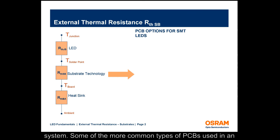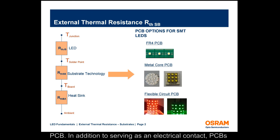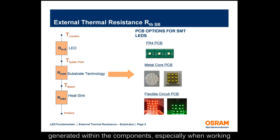Some of the more common types of PCBs used in an LED system design include FR4, Metal core PCB, and Flex PCB. In addition to serving as an electrical contact, PCBs also have to ensure efficient dissipation of the heat that is generated within the components, especially when working with high power components.